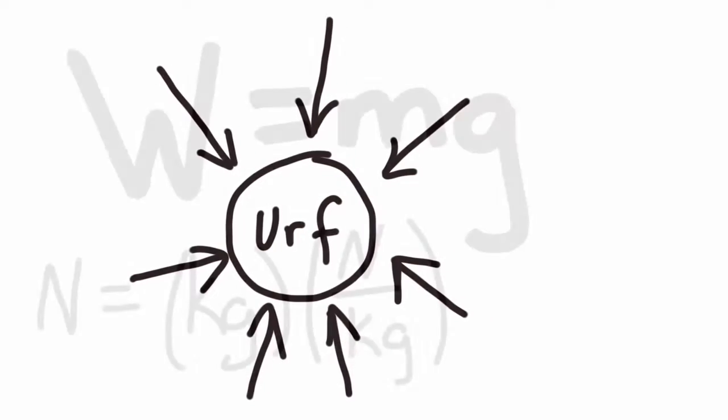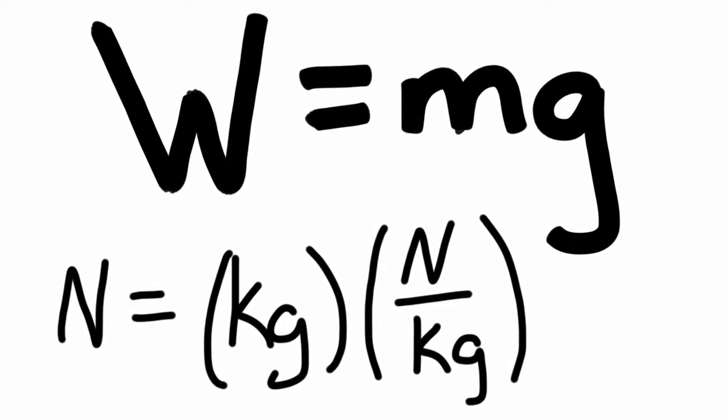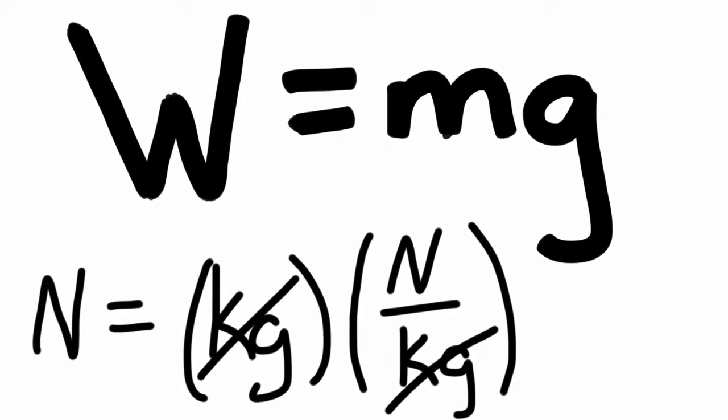So, we get, for units, Newtons is equal to kilograms of mass, multiplied by Newtons per kilogram of gravitational field strength. Look at that. Newtons equals Newtons. That actually makes sense.